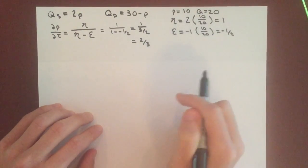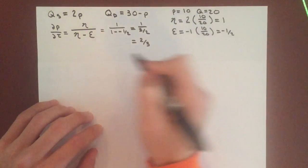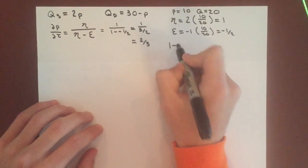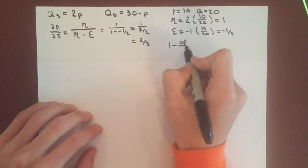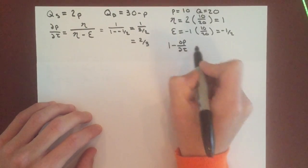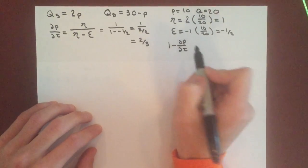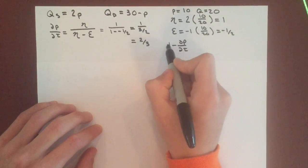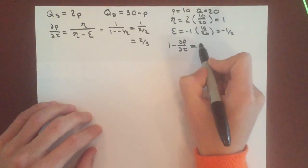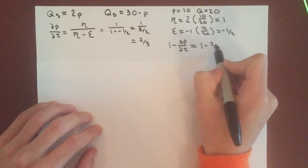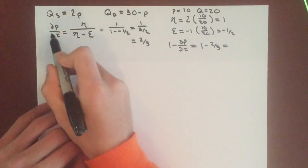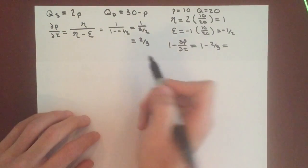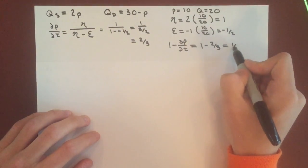How do you find the incidence on producers? You take 1 minus incidence on consumers. The key here is that these are the fractions of the tax that producers and consumers pay, so they are never greater than 1. If incidence on consumers equals 1, that means they contribute the entire amount of the tax.